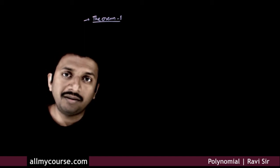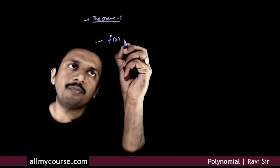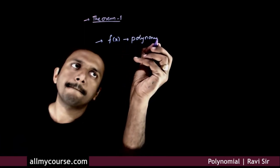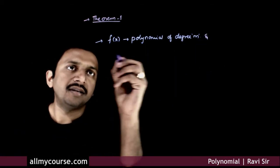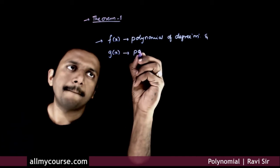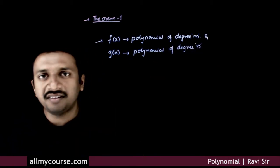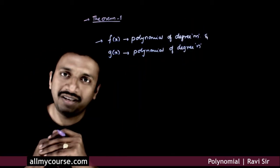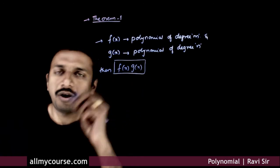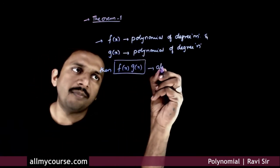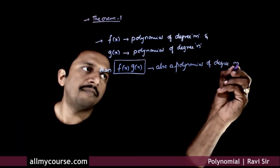The first theorem we are going to look at in the theory of equations is very simple. It states that if f(x) is a polynomial of degree m and g(x) is a polynomial of degree n, then f(x) times g(x) — the product of these two polynomials — is also a polynomial of degree m plus n.